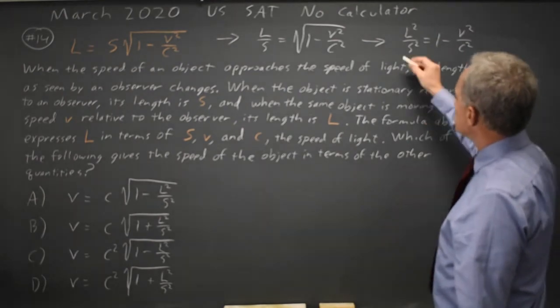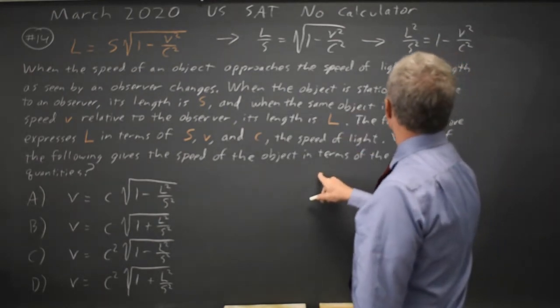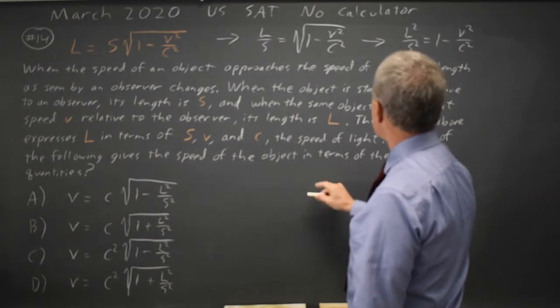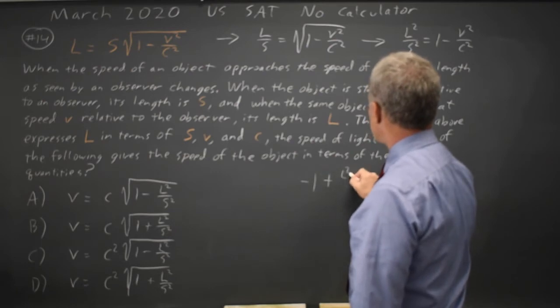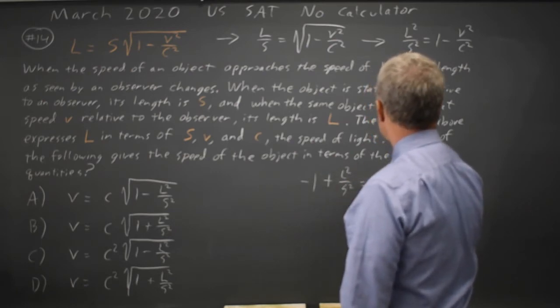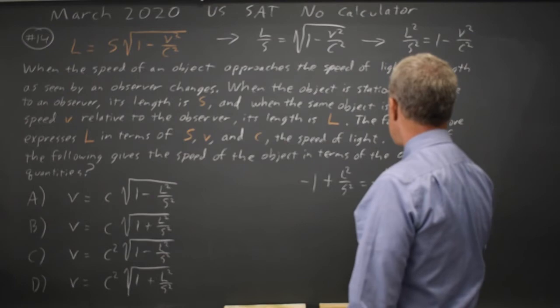Now I'm going to jump down here. I will subtract 1 from both sides. Negative 1 plus L squared over S squared equals negative V squared over C squared.